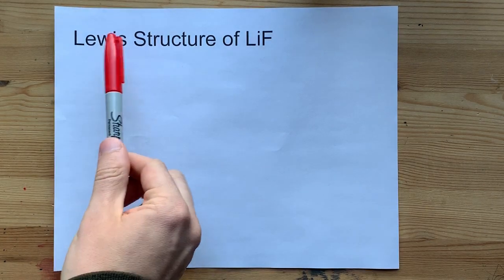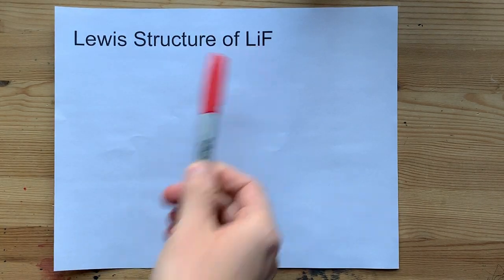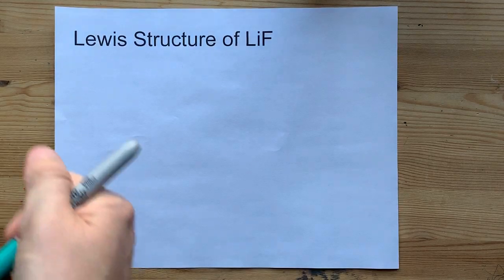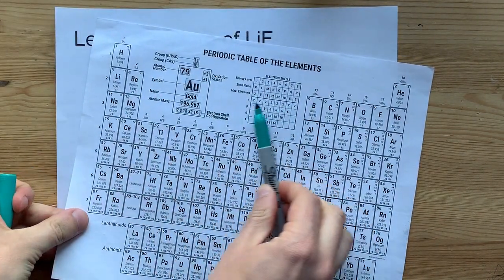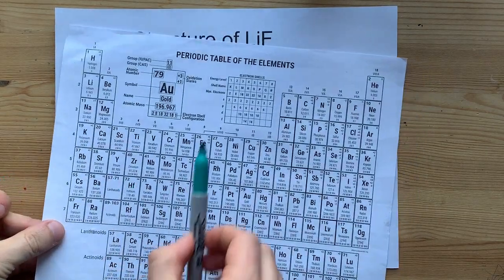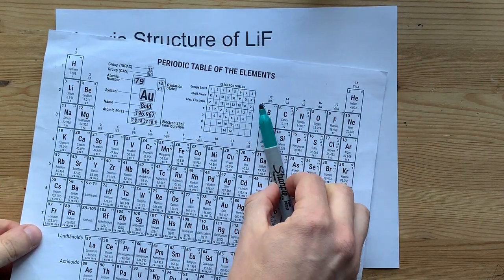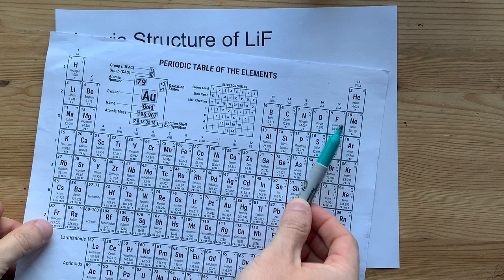Hey, let's draw the Lewis structure for lithium fluoride, that's LiF. The first thing to note is that lithium is a metal from the left side of the periodic table. Fluorine is a non-metal from the right side of the periodic table.